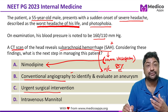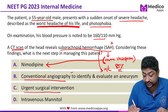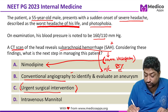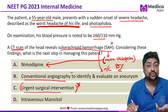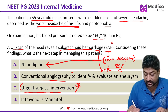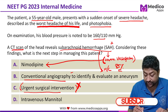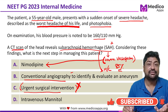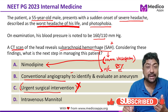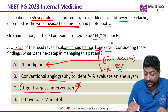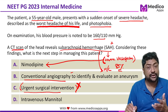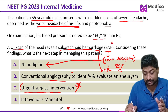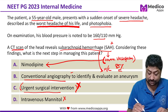Urgent surgical intervention: many of these patients will require surgery, but you cannot proceed with urgent surgical intervention until you have established the source of bleeding. So this cannot be the next step before conventional angiography. IV mannitol: many patients will have increased intracranial pressure and we give IV mannitol for that, but here none of the signs of increased intracranial pressure are mentioned, so this may not be the immediate next step.